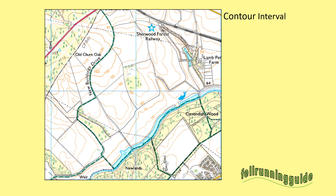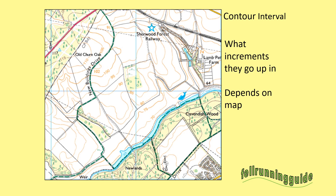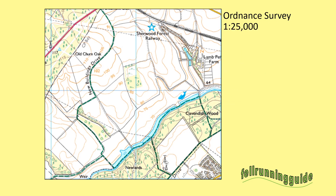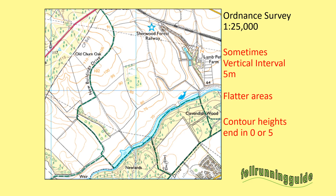So what are contour intervals? Think about them as what the contours go up in. Now that depends on the map. This is the Ordnance Survey 1 to 25,000 map. And sometimes on this map the contours go up in five metre intervals — that's usually where the land is flatter. In that case the contour heights always end in a zero or a five: 70, 75, 80, 85, 90 — going up in five metre intervals.